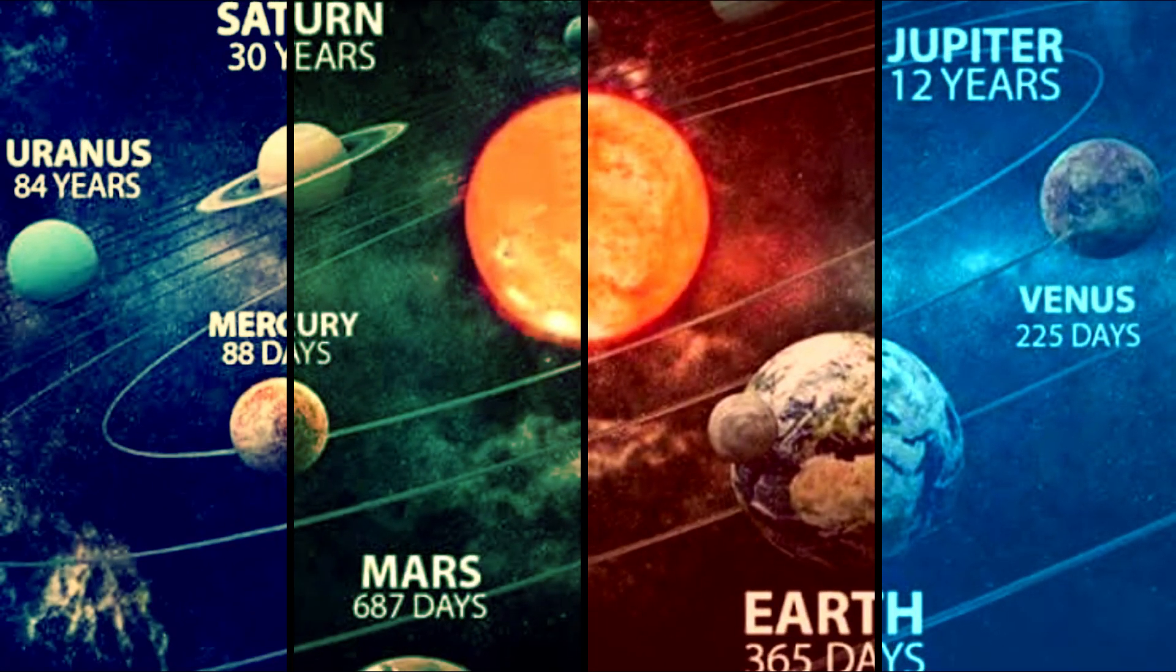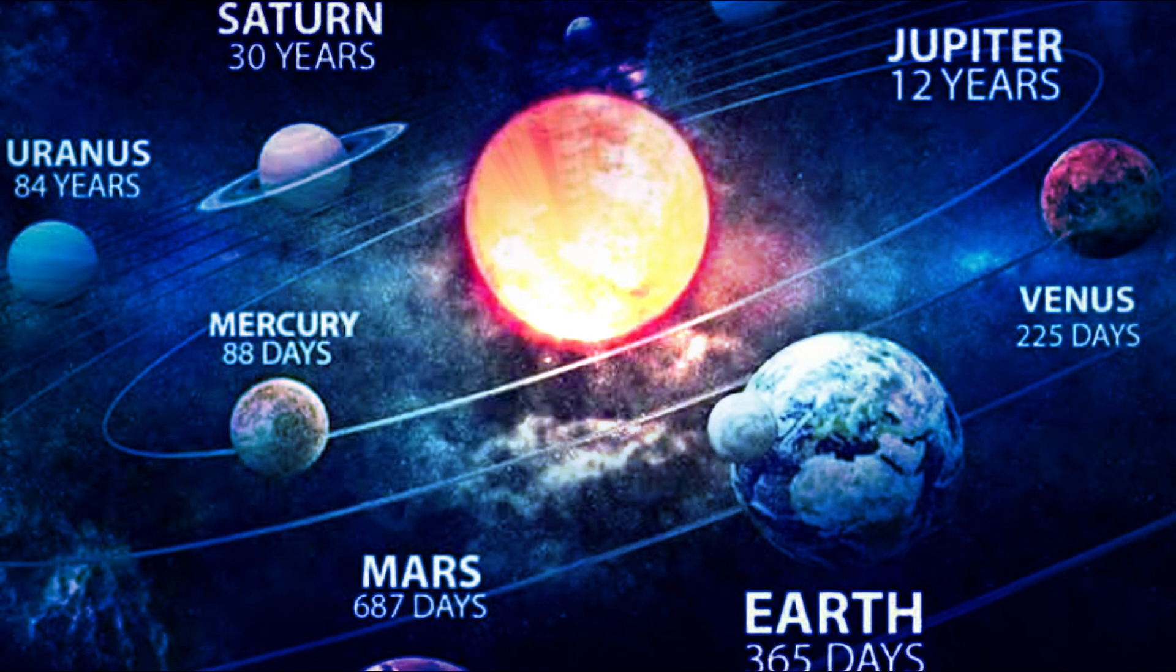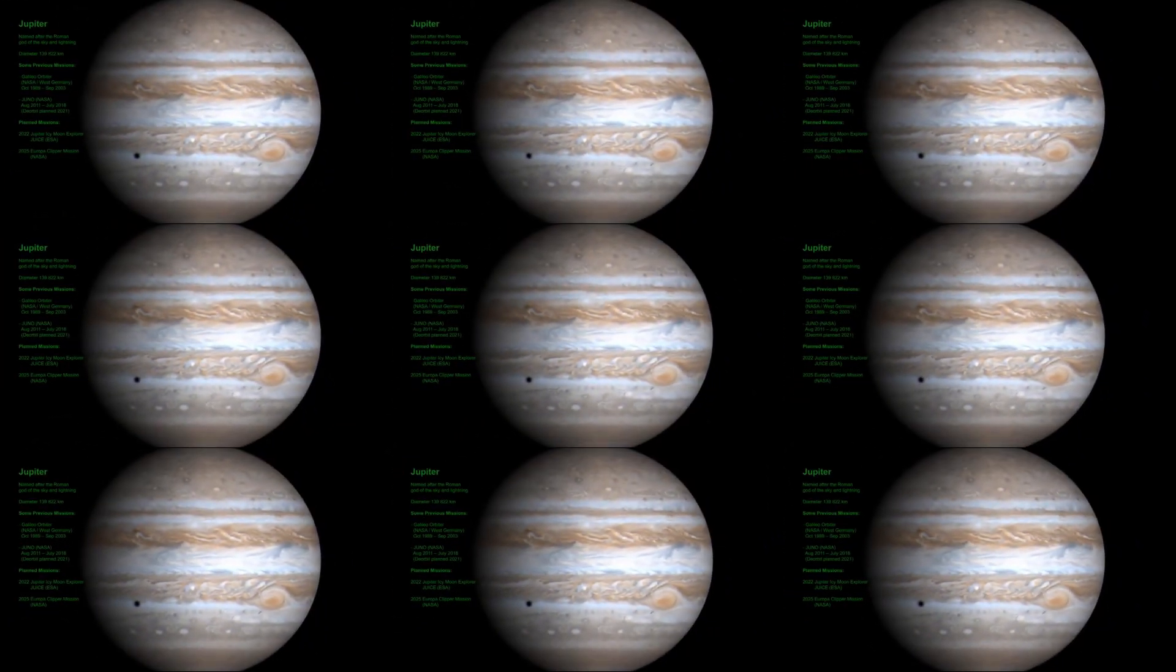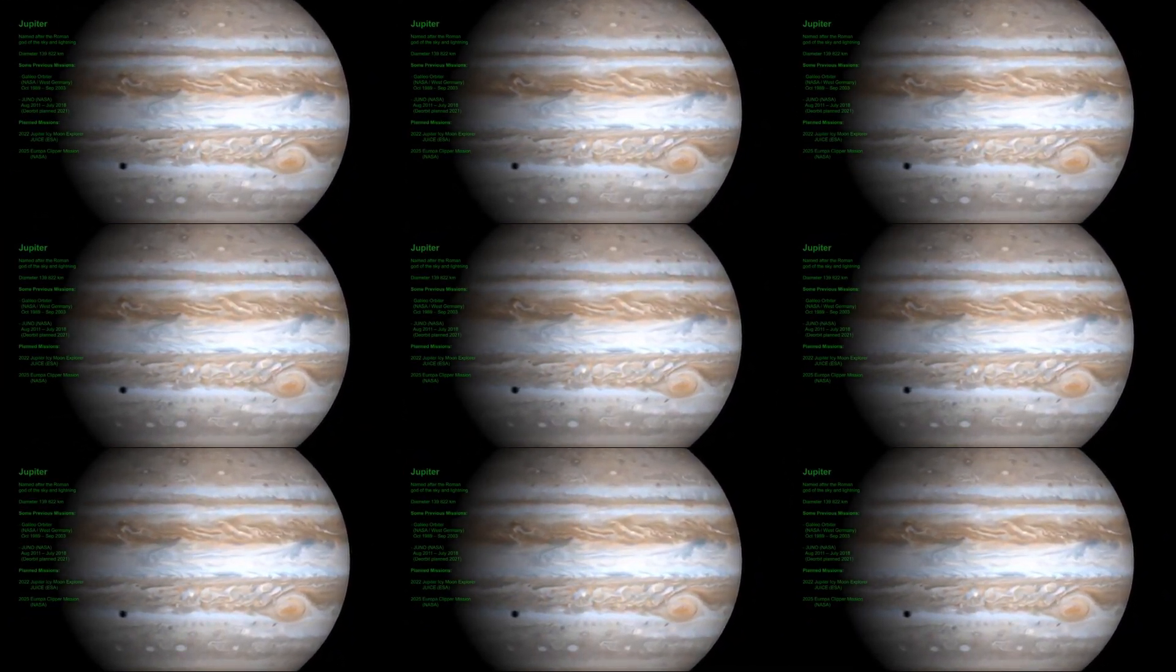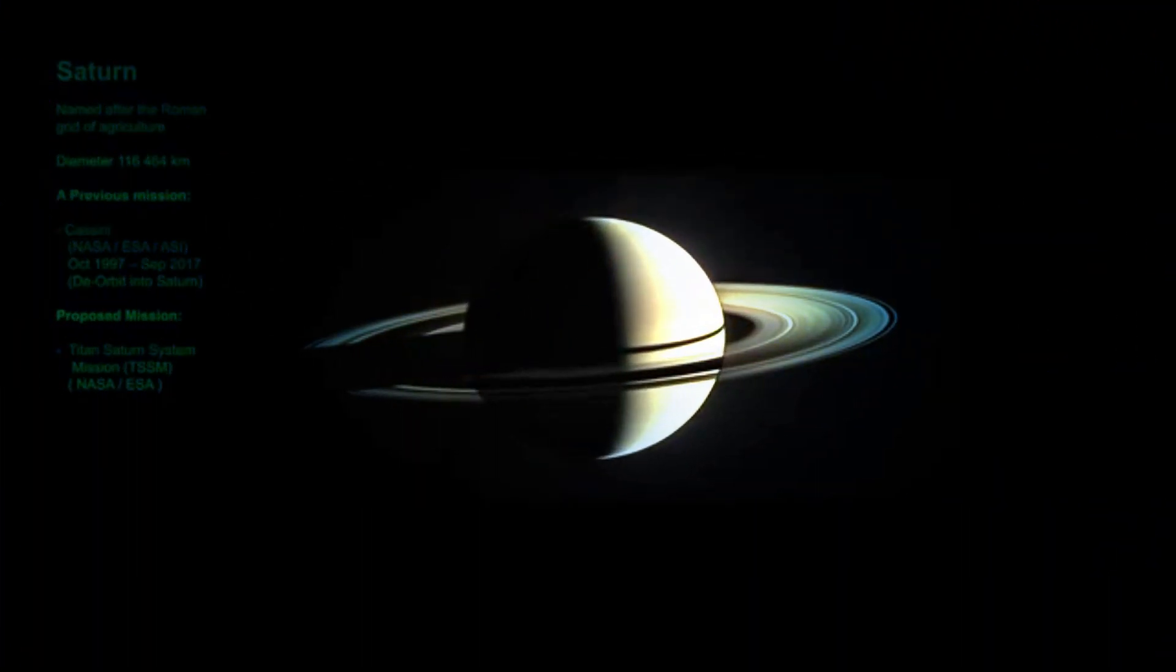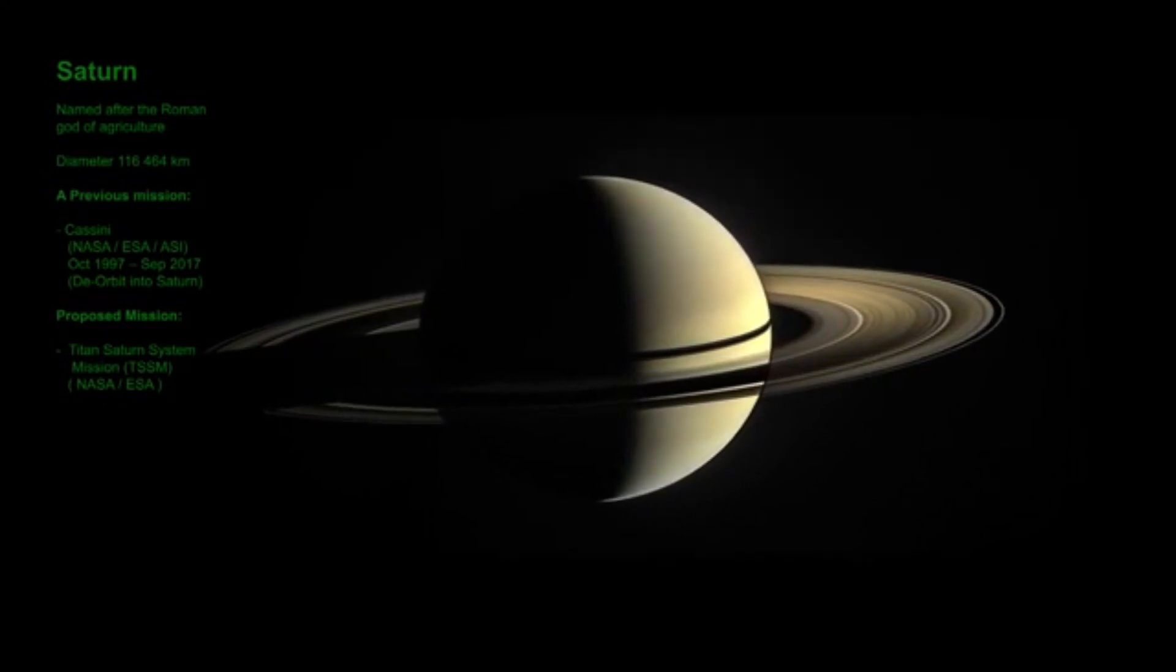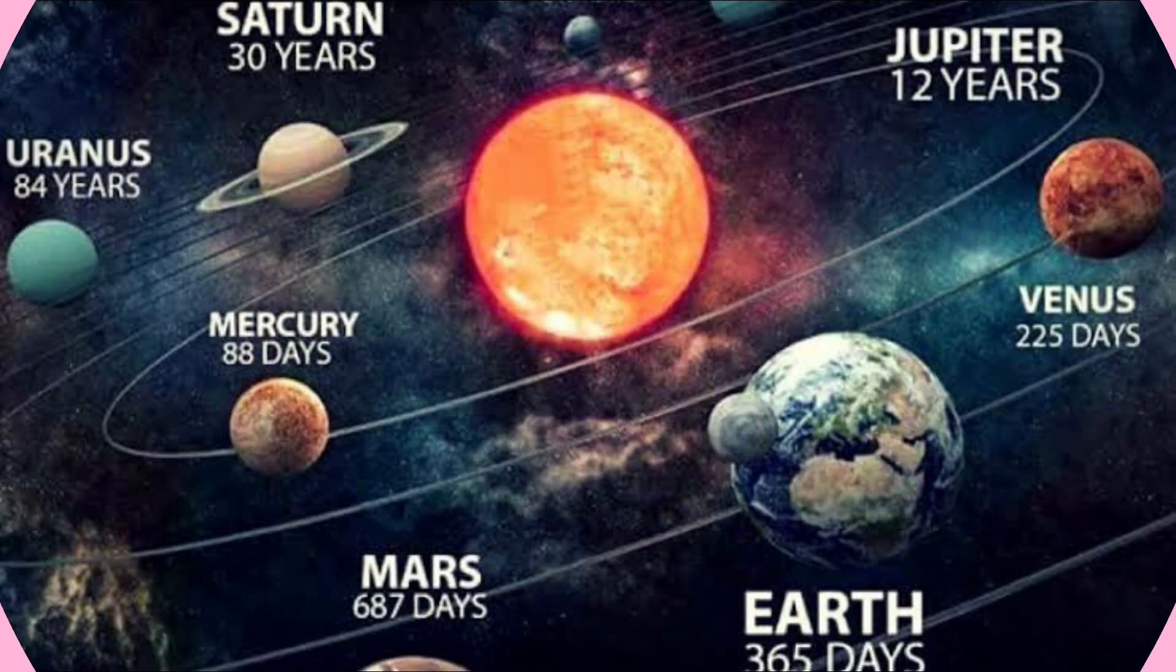Next planet Mars, it takes 687 days to complete one revolution. And the next planet Jupiter, it takes 12 years to complete one revolution around the Sun because the distance is very long from the Sun. And the next planet of Jupiter, Saturn takes 30 years to complete the revolution. That means you will celebrate your birthday every 30 years if you are living on Saturn.